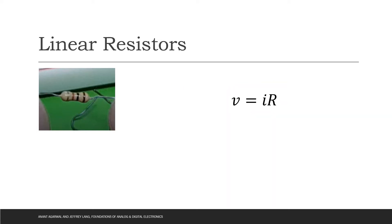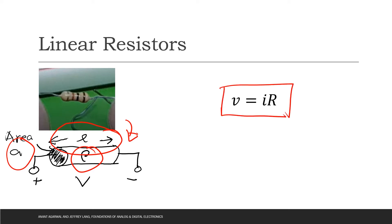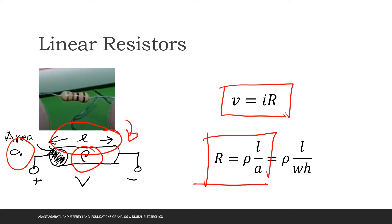Resistance also depends on geometry. For a cylindrical wire-shaped resistor, we have a conducting wire with cross-sectional area A and length L. The resistivity rho is innate to the material. We can express the resistor as the ratio V over I, but in terms of geometry, R can also be expressed as resistivity times length divided by area. For a cuboid-shaped resistor, the area can be expressed in terms of the width and the height.